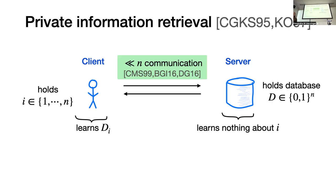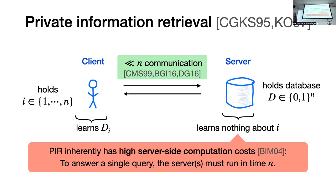To date, there's been lots of work on making PIR as practical a primitive as possible. We know how to build PIR with relatively small communication costs — specifically in the single-server setting, we know how to build PIR where the communication scales polylogarithmically with the database size. However, PIR schemes have high server-side computation costs. Beimel and Malkin proved a lower bound showing that this is inherent: to answer even a single PIR query, our server needs to run in time linear in the database size. Intuitively, if a server answers a PIR query without touching some location in the database, the server learns the client probably isn't reading that location, which would leak information. So the server needs to do essentially a linear scan over the entire database.